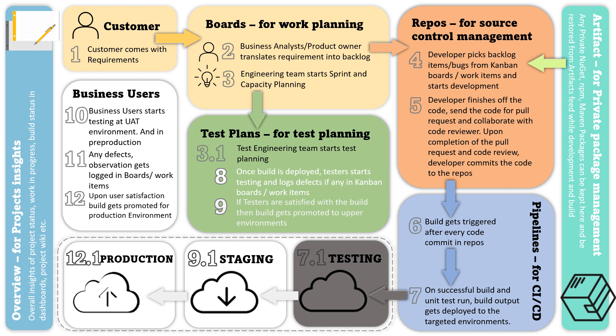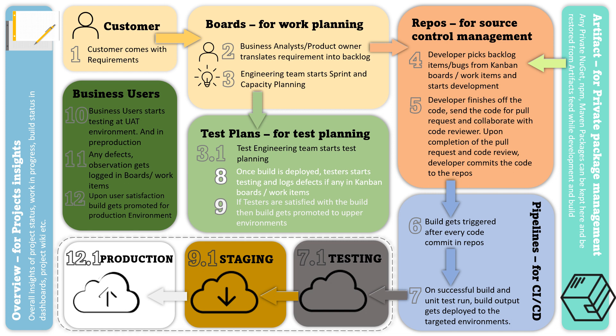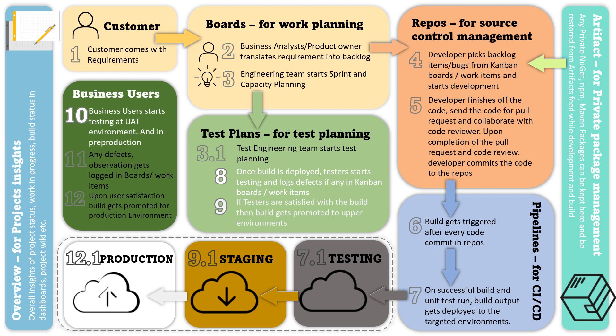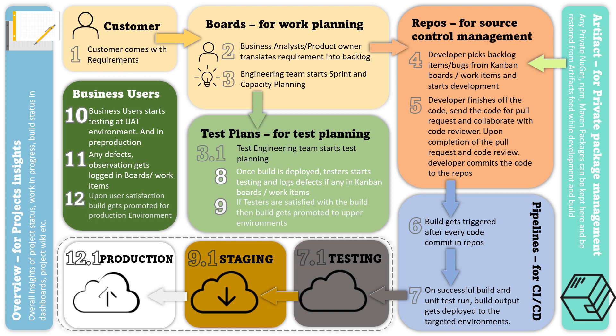If testers are satisfied with the build, it gets promoted to the upper environment — the next upper environment for us is staging. The artifacts, after testing, get back to the artifact repository and are brought directly into the staging environment. In staging, the most important tests are business user tests. Business users start testing at UAT — the User Acceptance Test environment — and in pre-production. Any defects or observations get logged in Kanban boards or work items.